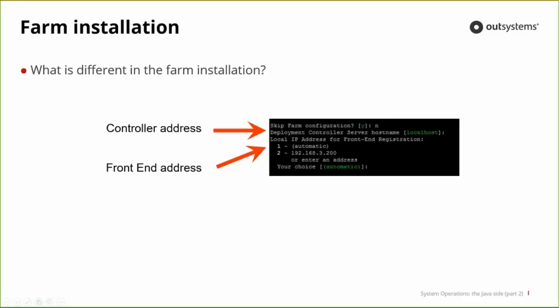What's actually different from the single server installation is that the controller address cannot be localhost or 127.0.0.1. You go into the configuration tool of your controller and change it — you don't skip the farm configuration, you get into that and change the localhost to the IP address or the name of the controller. The configuration tool needs to be exactly the same in all servers, so the name or IP address you set up on the deployment controller needs to be recognized by all the frontends.